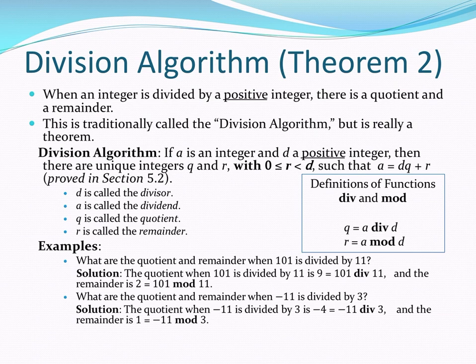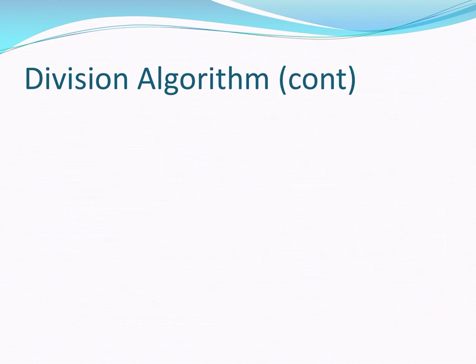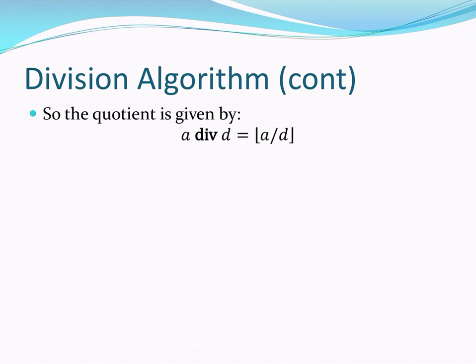All right, so let's look at some mathematical expressions for these functions. All right, so a div d is really just the fraction, and you take what is called the floor function of that fraction, a divided by d, a over d, and the floor function. The floor function is the integer that is the next integer down that is less than or equal to a divided by d. So if a divided by d is an integer, then the floor function doesn't do anything. As in the case of 101 divided by 11, we get 9 and a fraction. Well, the floor function of 9 and a fraction is 9. That's our quotient. For negative 11 divided by 3, we get negative 3 in a fraction. Well, the floor function of that is going to be negative 4. So the quotient is negative 4.